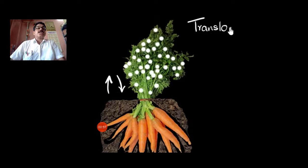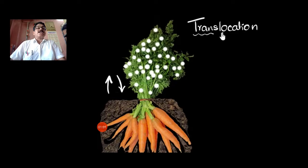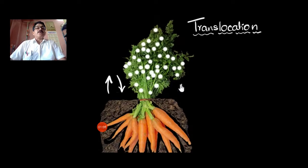The situation of the food substances, the different location, is known as translocation by the help of phloem. Even if you look at the phloem, what are the effects of the food substances?